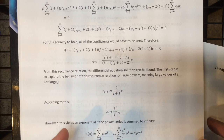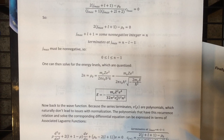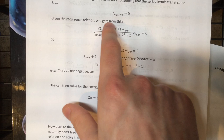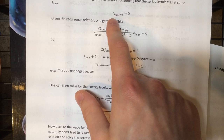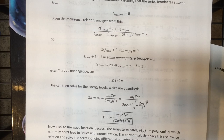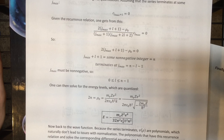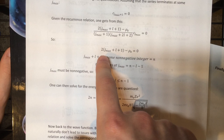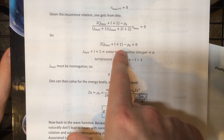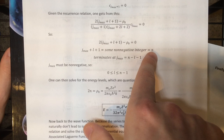That is the next step. We pick some j-max — the power at which it terminates — and say that the coefficient at j-max plus one must be zero. Because of the nature of the recurrence relation, all higher coefficients will also be zero. So the numerator of the recurrence relation at j-max must be zero. This quantity in parentheses is just some integer, so we pick it as our quantum number n. We get two-n equals rho-naught. Plugging in the values for rho and k and solving, we get the famous energy formula.